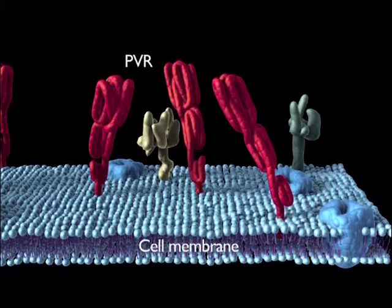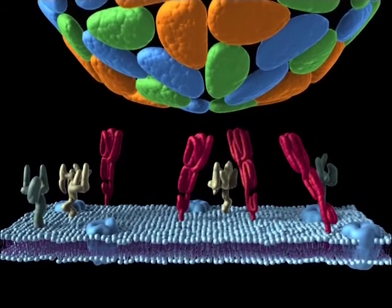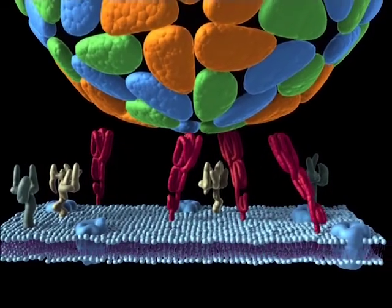The poliovirus receptor, or PVR for short, makes contact with the virus only through domain 1. It docks on the canyon of the virus and leads to major conformational changes in the particle.